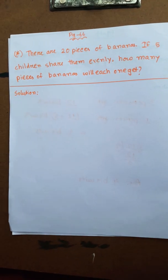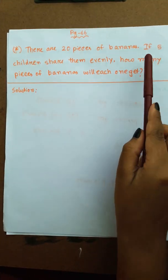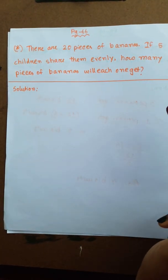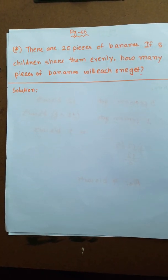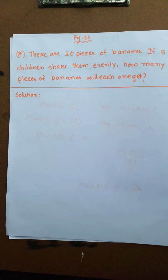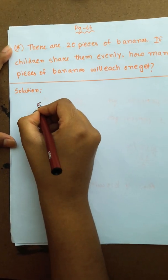Our next math: There are twenty pieces of banana. If five children share them evenly, how many pieces of banana will each one get? 20 bananas, 5 children sharing evenly.